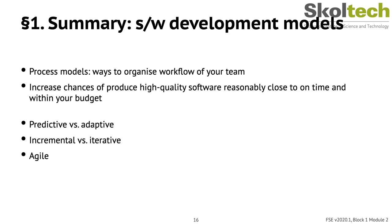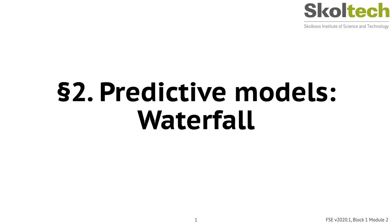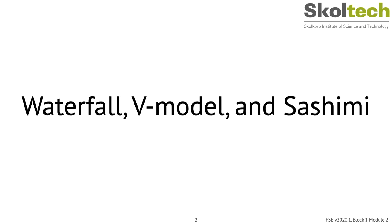Different process models are ways to organize the workflow of your team, basically to increase chances of producing high quality software reasonably quickly and cost effectively. These models are typically characterized as either predictive or adaptive, and incremental or iterative. They also typically presuppose a number of conditions we will be talking about. Let's get our hands on the predictive models first — we'll start with examining waterfall, V-model, and the sashimi.